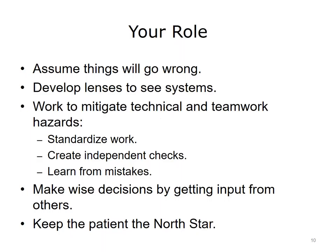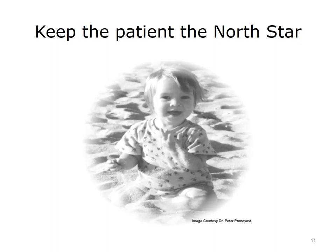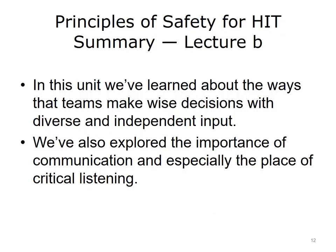So what's your role and how do you apply these principles? First, accept that you're fallible and assume things will go wrong. Don't believe that no matter how expert you are in informatics, you're going to do your work flawlessly — you will make mistakes. Secondly, develop lenses to see these systems: when things go wrong, think about training, teamwork, and protocols — not just individuals. Third, work to mitigate both technical and teamwork risks by standardizing your work — for example, limit the number of drug choices in a drop-down list. Create independent checks: if something is really critical, make sure the information system has a fail-safe to confirm it's right. And learn from your mistakes.